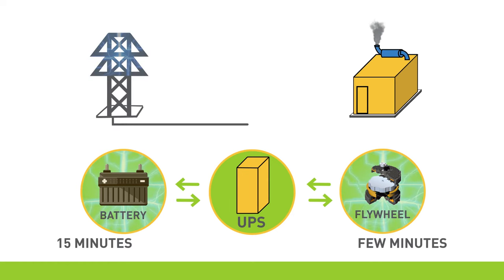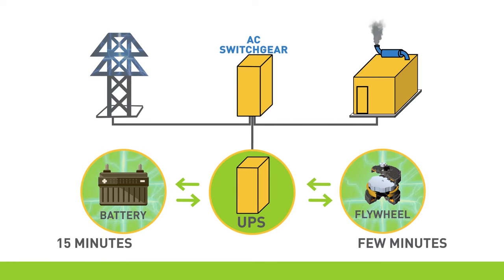After utility power is restored and stable, the automatic transfer switch switches back to the utility feed and shuts off the backup generators. The UPSs then recharge their energy storage capabilities.